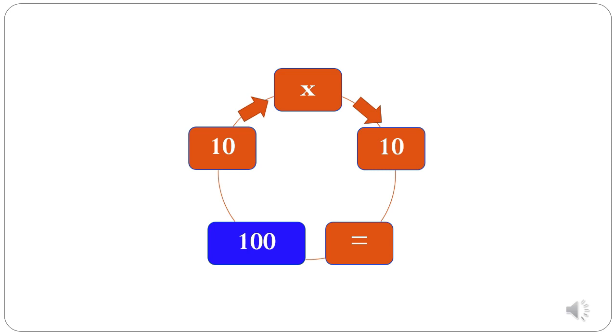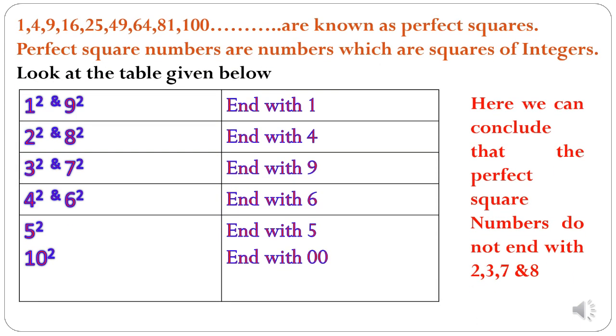Students, note here that 10 square is ending with 2 zeros. Students, see that the numbers we got after multiplying an integer with itself like 1, 4, 9, 16, 25, 49, 64, 81, 100, etc are known as perfect squares. That means perfect square numbers are numbers which are squares of integers.